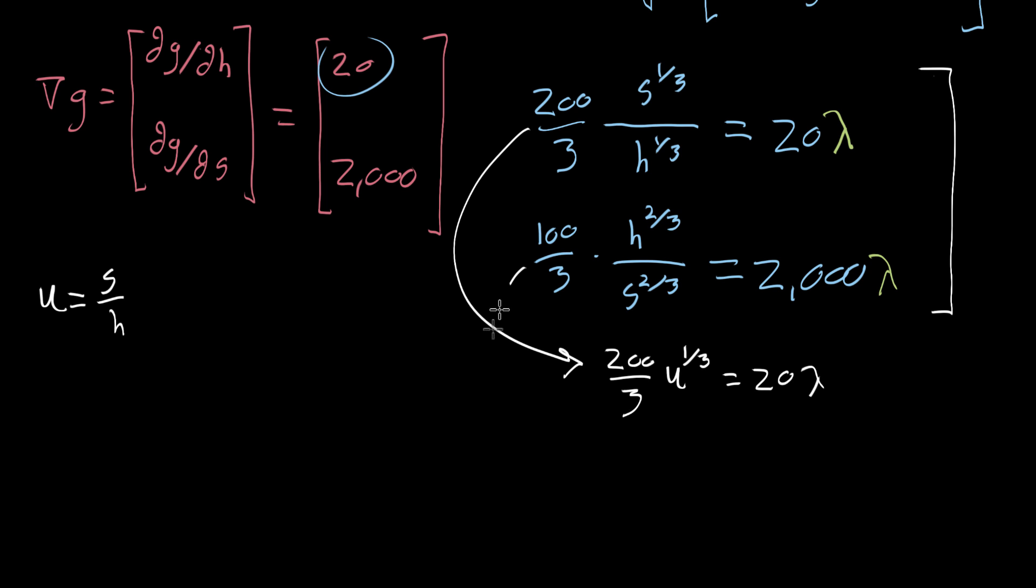And then likewise, what that means for this guy is, well, this is H over S, not S over H. So that one's gonna be 100 thirds, not times U to the power two thirds, but times U to the negative two thirds, because we swapped the H and S here. So that's U to the negative two thirds. And this is just to make it a little bit cleaner, I think.